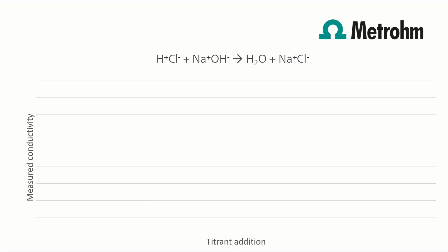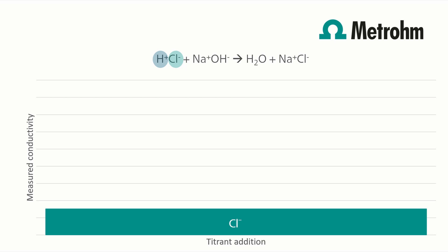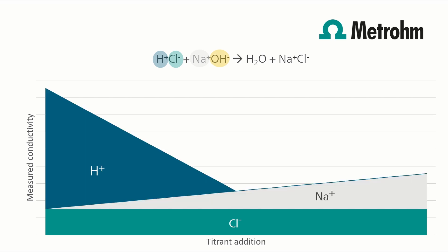At the beginning, we only have hydronium and chloride ions present. During the titration, the chloride concentration remains constant. As soon as sodium hydroxide is added, the hydronium and hydroxide ions react. The conductivity decreases as sodium ions are less conductive than hydronium ions.